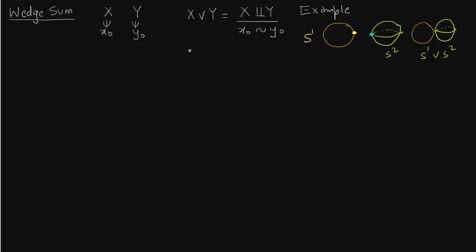Now let us do S¹ wedged with S¹. What we get is a figure 8. We draw X and Y and mark the distinguished points, then identify them together — and what we get is a figure 8. I have transposed it so that it looks like a figure 8.